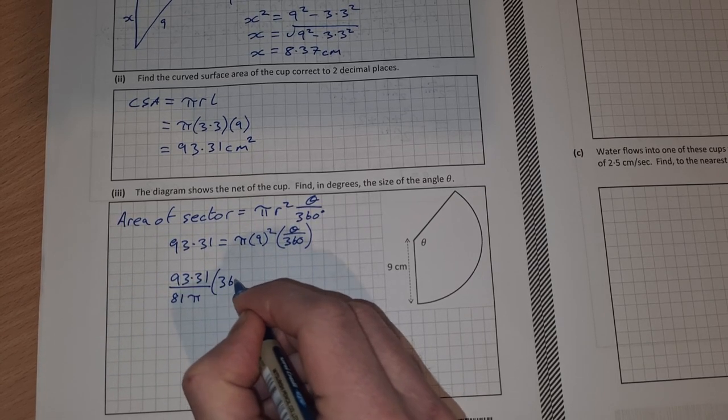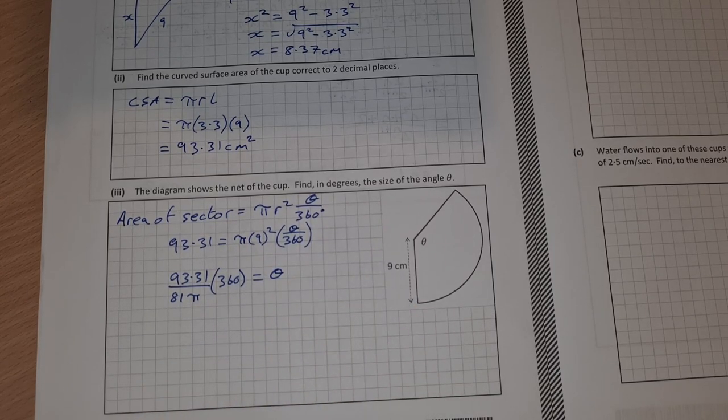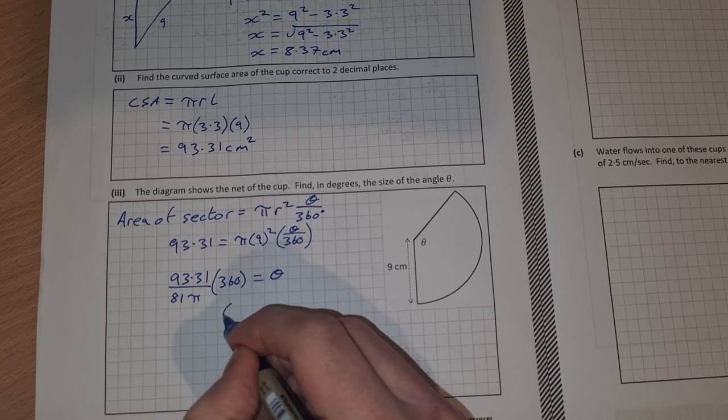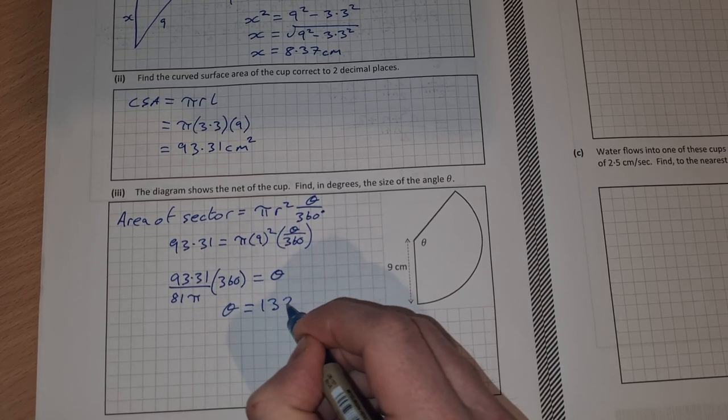Multiplied by 360. That'll leave me with θ on the right hand side. Work that out. Pop it all into your calculator. You get θ equals 132 degrees.